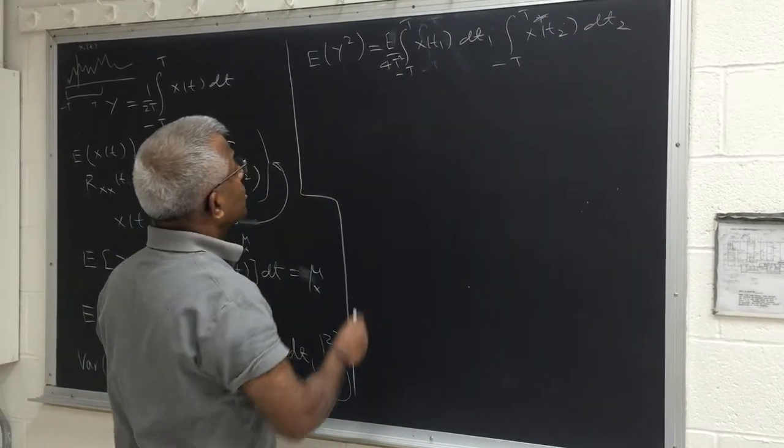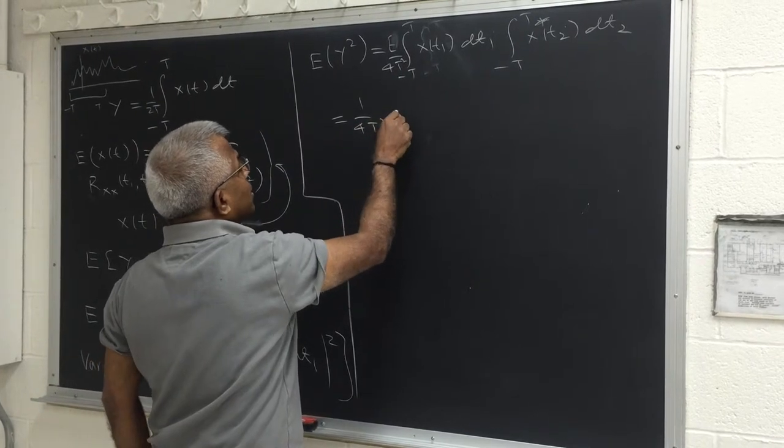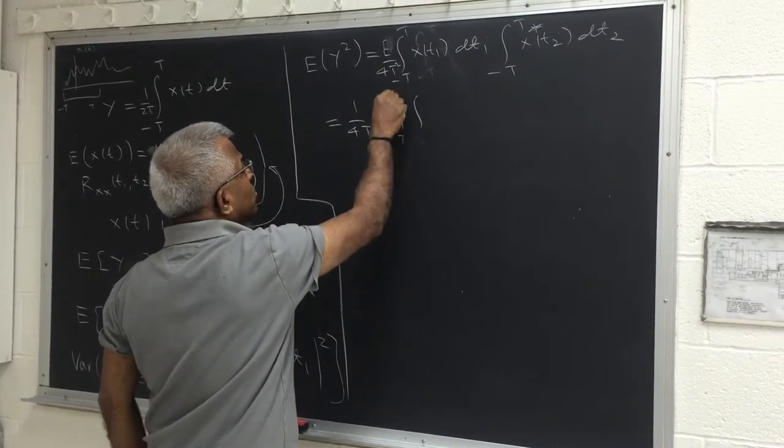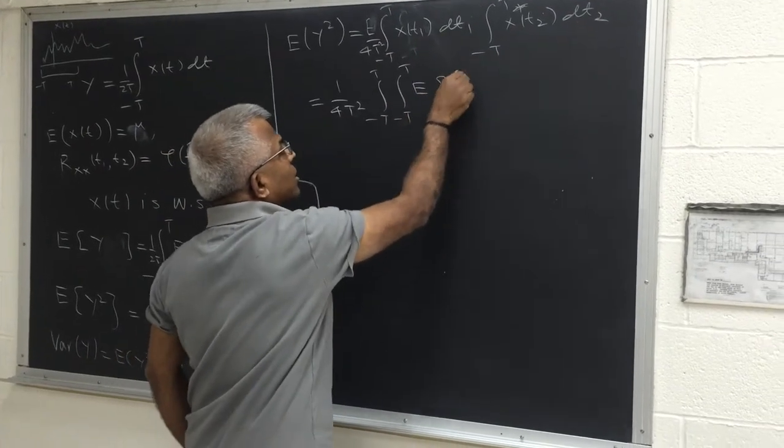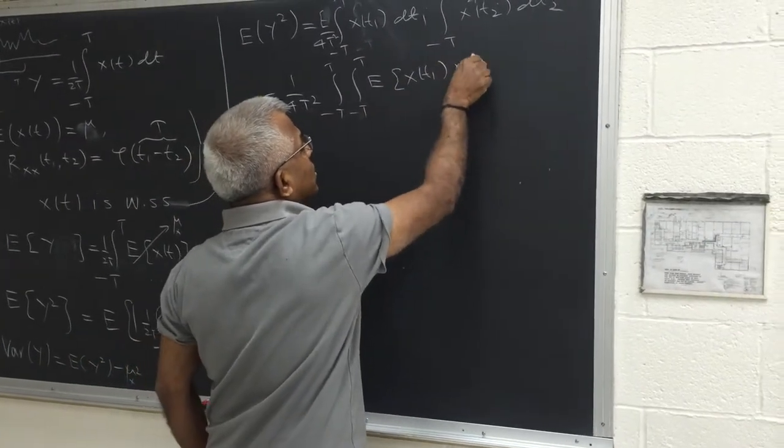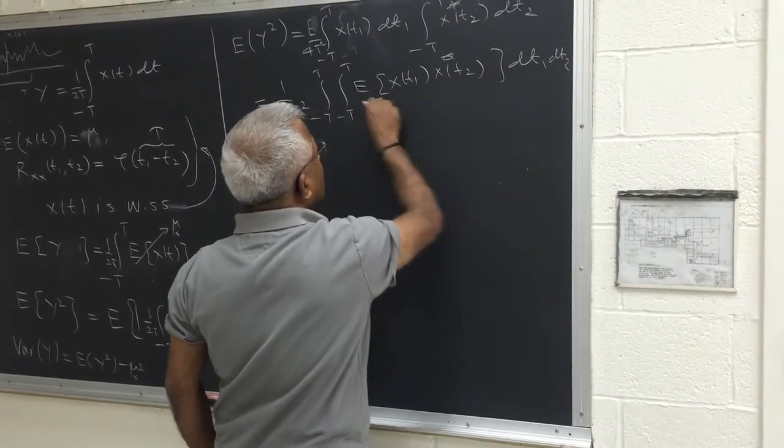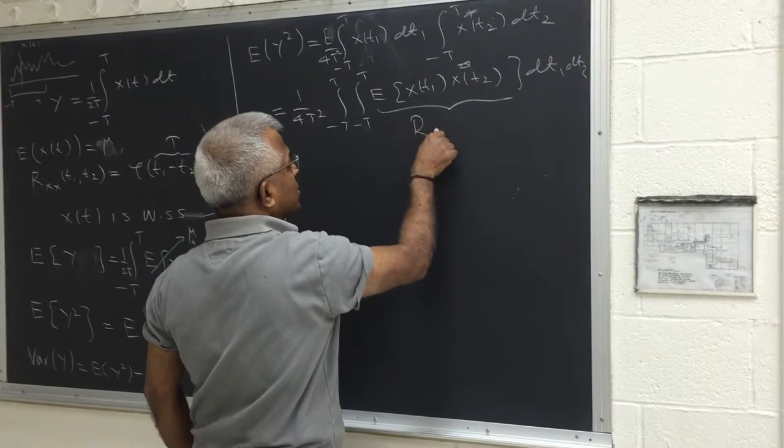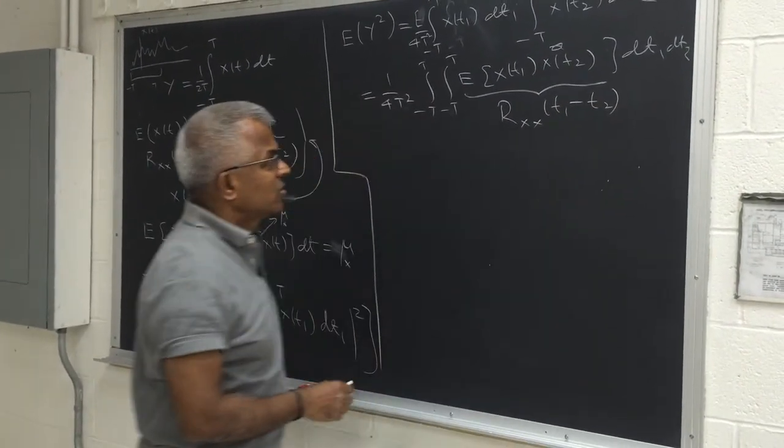So this integral is 1 over 4t squared, double integral from minus t to t, minus t to t, expected value of x of t1 times x of t2 star, dt1 dt2. But this quantity is R_XX of t1 minus t2 because it is wide-sense stationary.